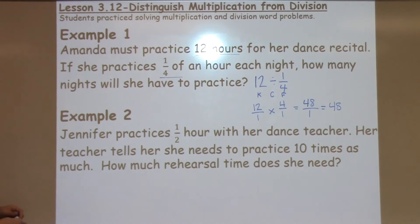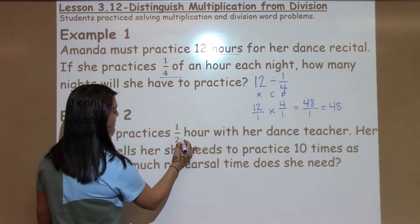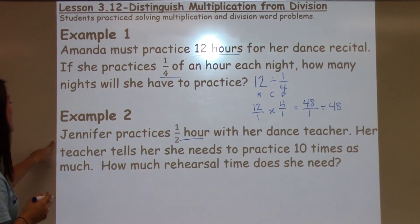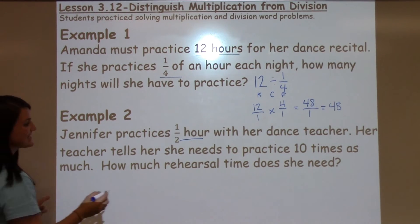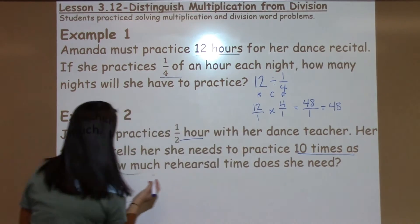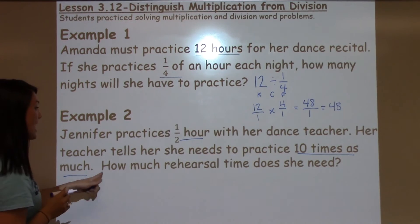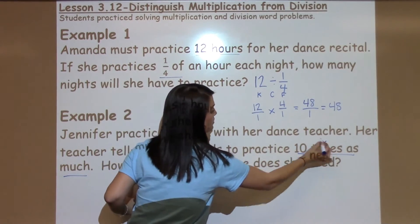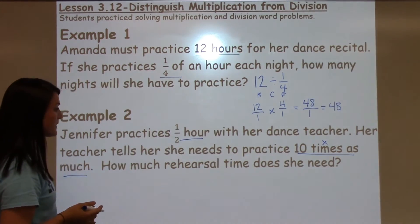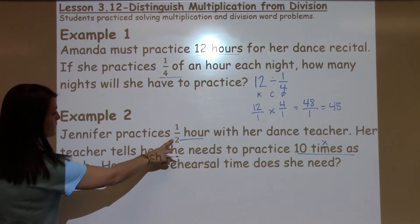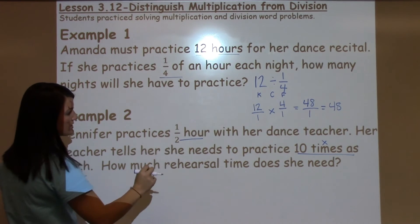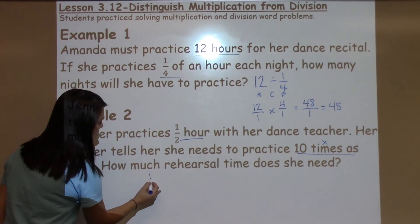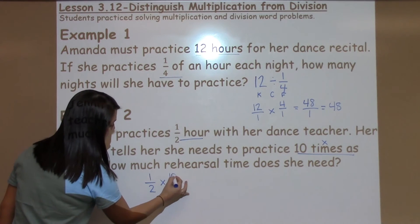The next example says: Jennifer practices half an hour with her dance teacher. Her teacher tells her she needs to practice 10 times as much. How much rehearsal time does she need? This problem actually gives me a multiplication word, and it is a multiplication problem. If we have half an hour and she needs to practice 10 times that much, we're going to take one-half times 10.